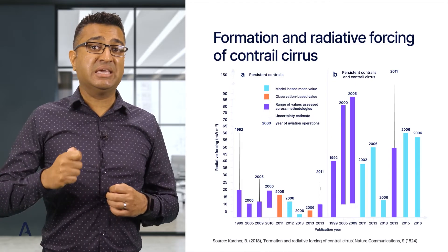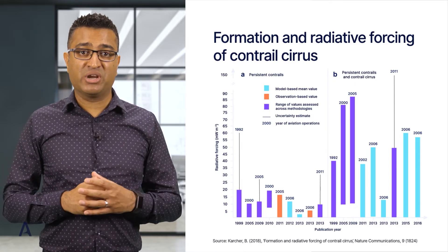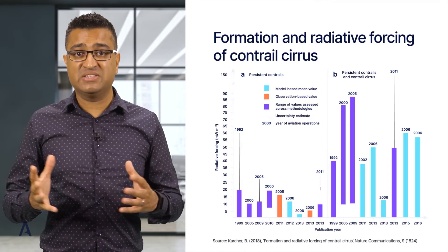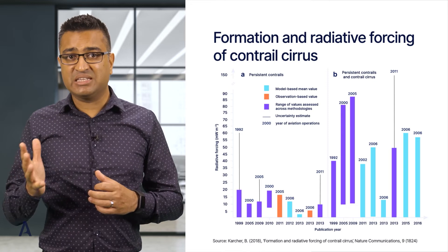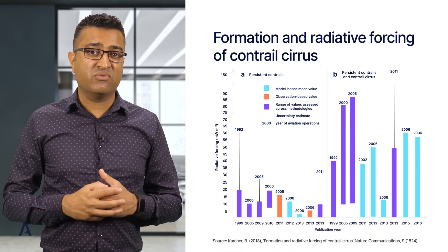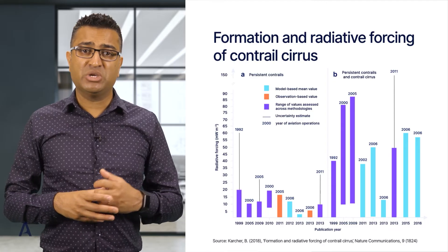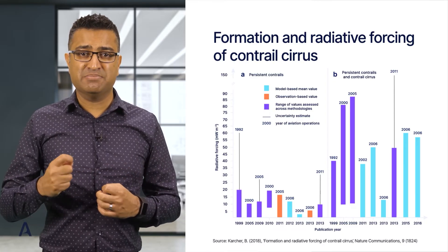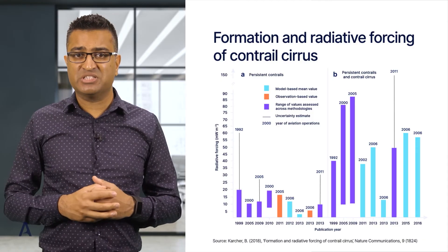When including the impact of contrails which have evolved into cirrus cloud, the right-hand side of this chart shows estimates of radiative forcing between 12 and 86 milliwatts per square metre of cloud. The large variations in radiative forcing estimates occur because the science of contrails is not very well understood.